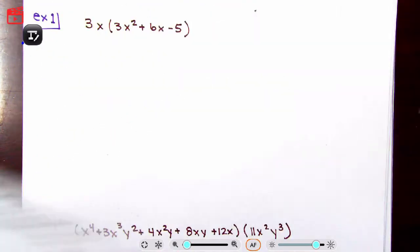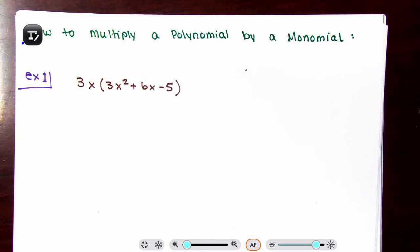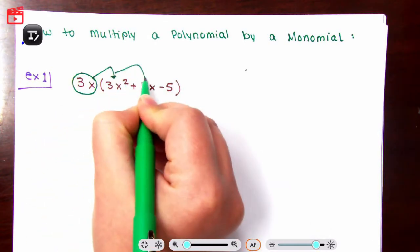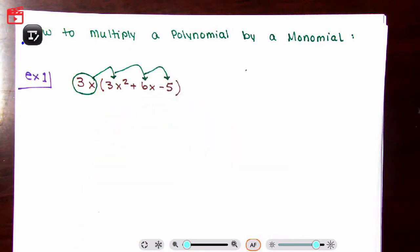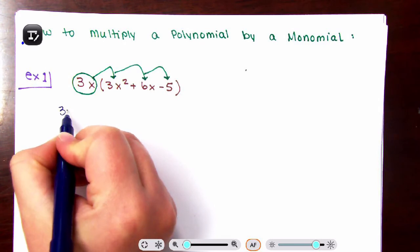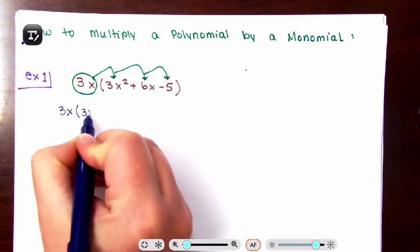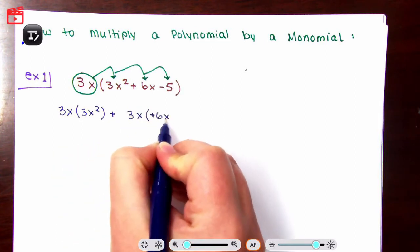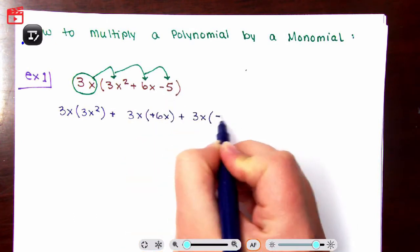Now let's complicate things a little bit. What if we have a polynomial and we are multiplying it by a monomial? In a way you're kind of foiling it, but in reality what you're doing is distributing it to all terms. Take the monomial and distribute it to all terms by multiplying. I'm going to show you two different ways. The first way is the horizontal way: 3x times the first term 3x squared, plus 3x times the second term positive 6x, plus 3x times the last term negative 5.